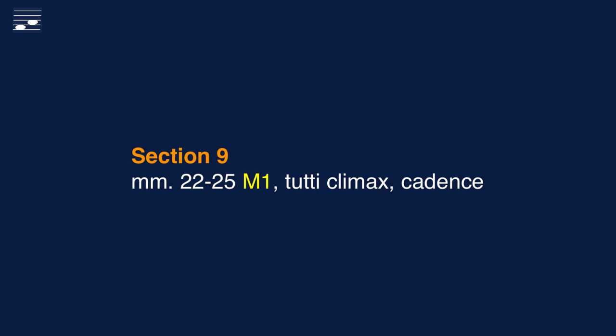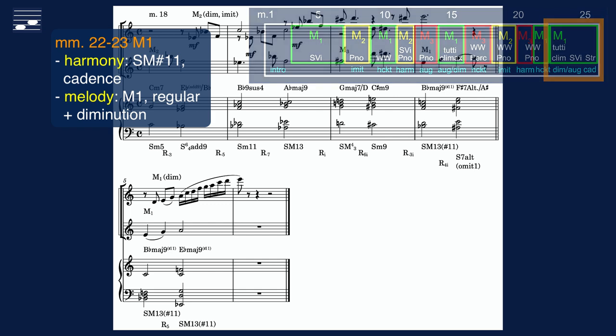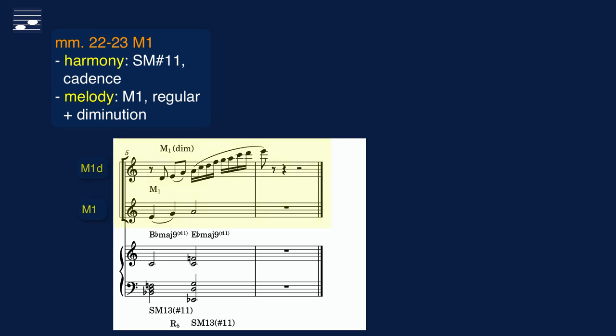Near the end there's the second tutti climax in measure 22. The main element is motif M1 presented in original form and as rhythmic augmentation. The latter is an ascending arpeggio.